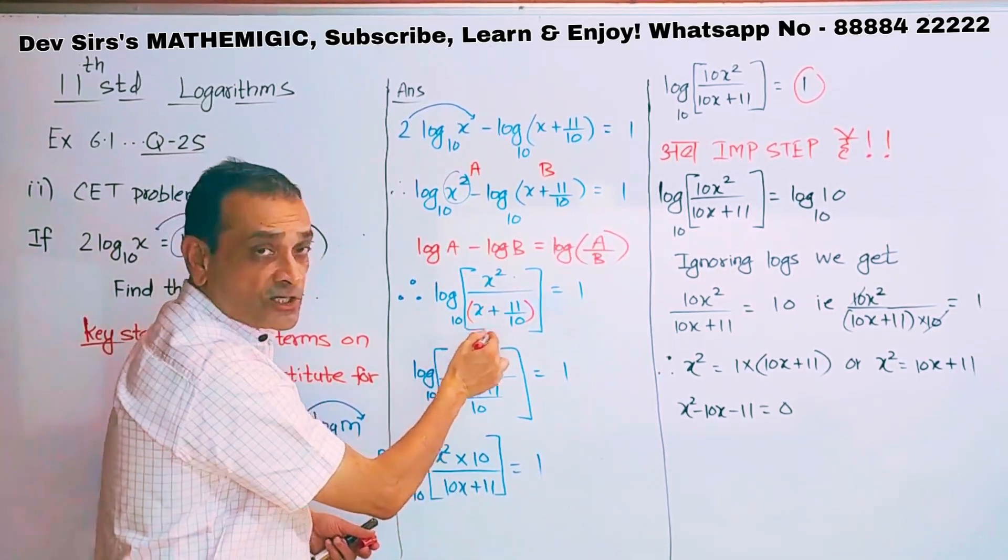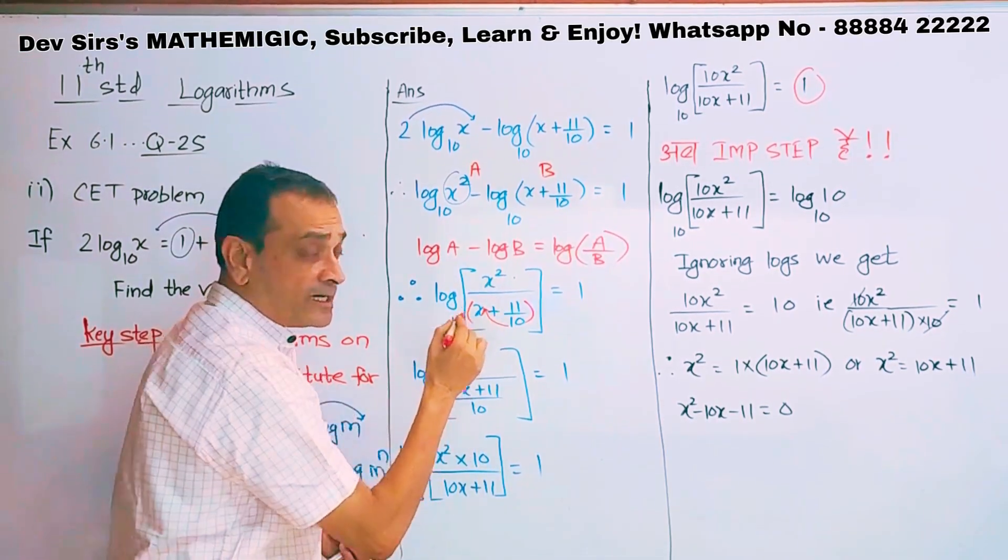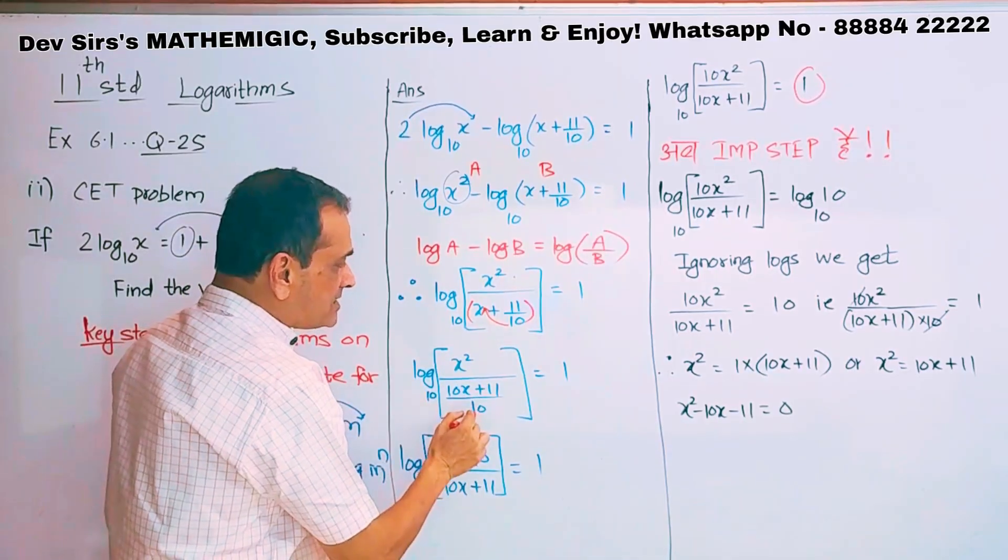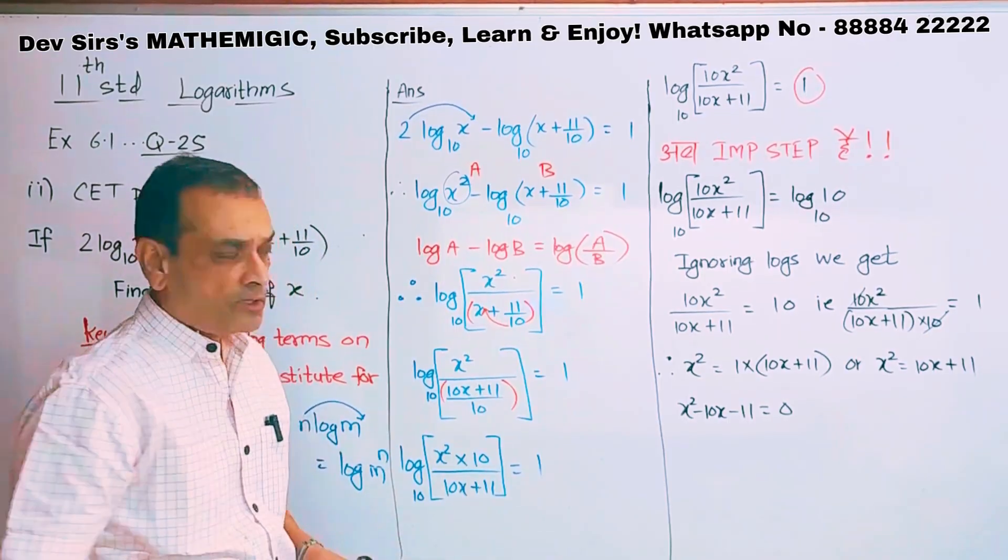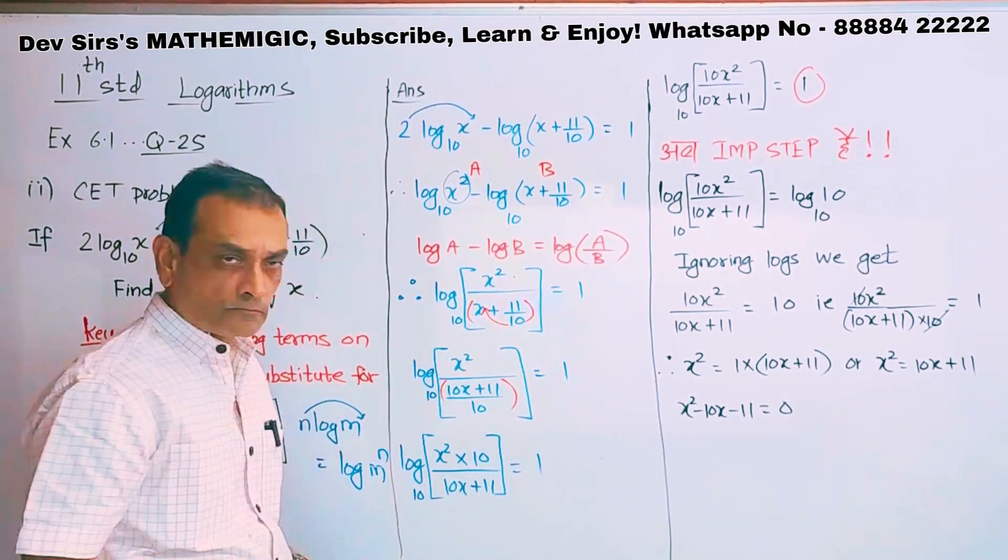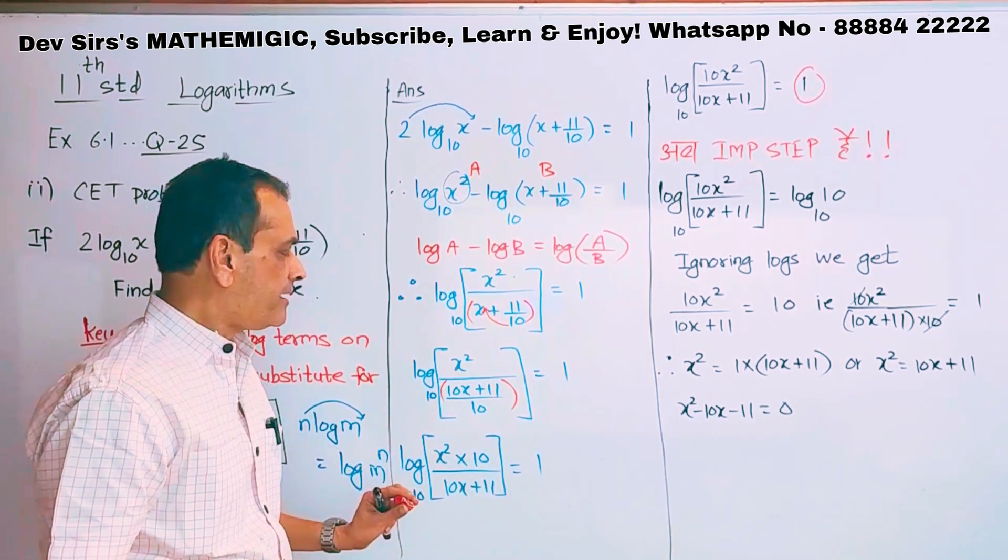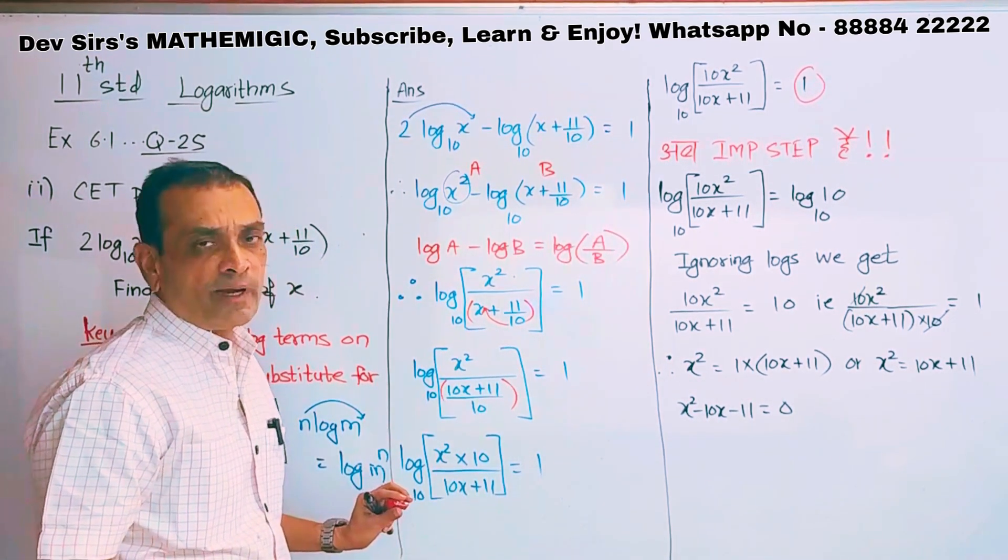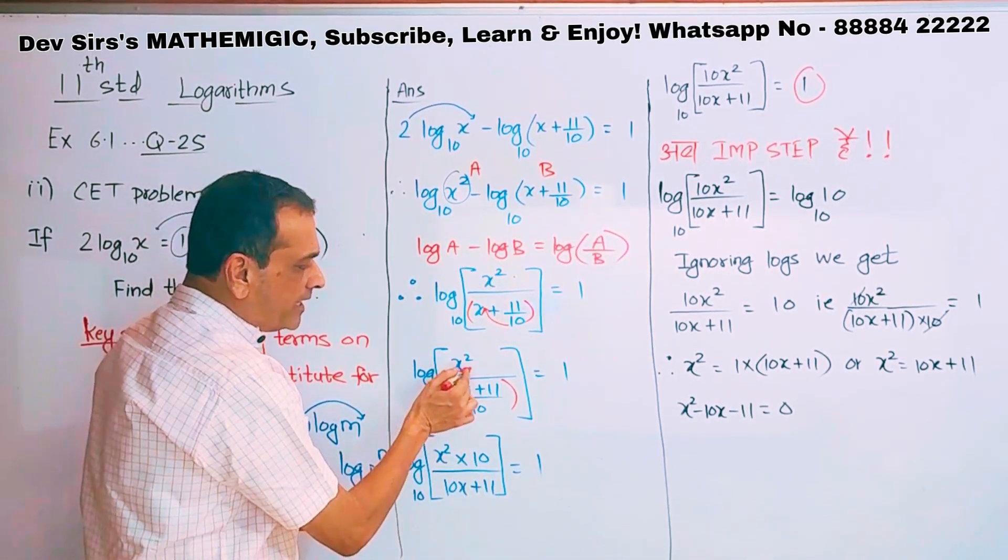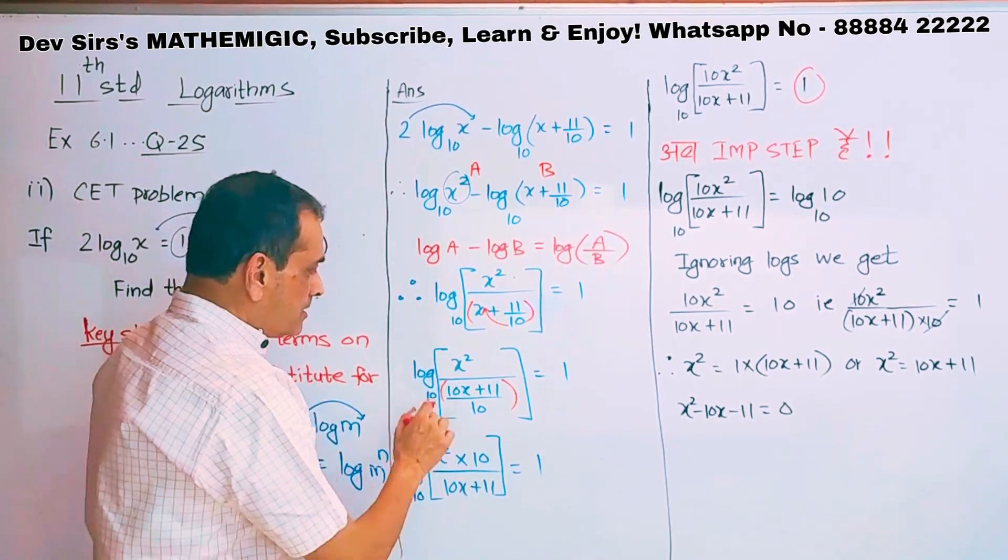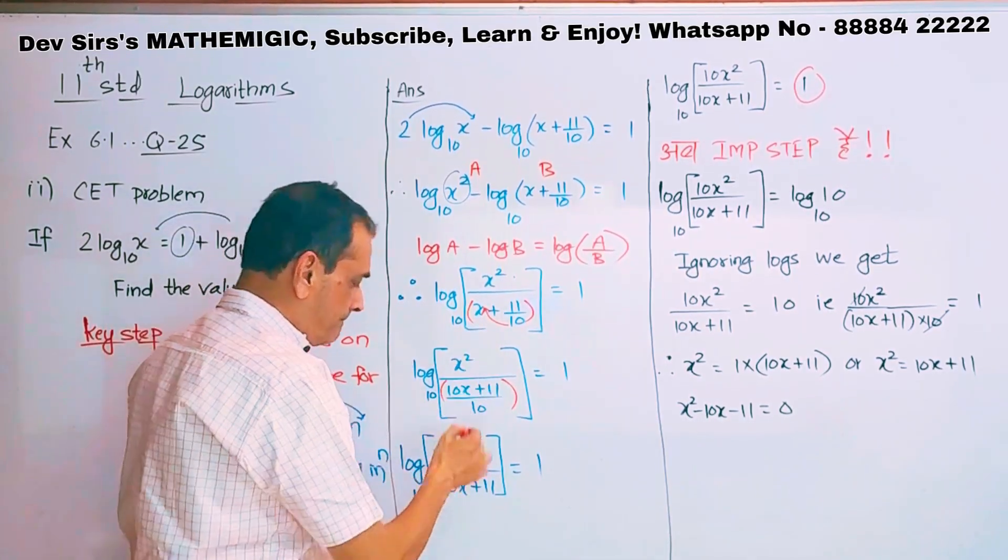Now I take the LCM, it's a fraction, so LCM is 10. So 10 into x, basic 10 standard. So LCM is 10, 10x plus 11 upon 10. After taking LCM, I get this, 10 is the only number. Think properly, take a deep breath, clear your mind.